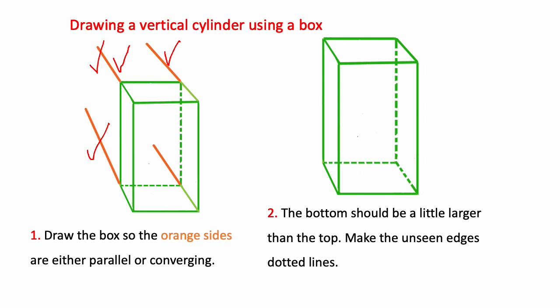You end up with a box where the bottom is larger than the top, which is appropriate when we're looking down at the cylinder from our usual bird's eye view. Make the unseen edges dotted lines so the form is clear and we know which edges are in front and which are in the back.